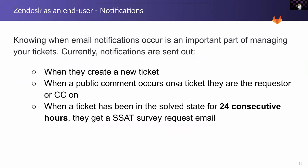It's important to know when you get notified. You'll get an email notification when you create a new ticket — an initial message letting you know we've received it along with some general information. When a public comment occurs on the ticket that you didn't make, you'll get an email with the comment and confirmation that the ticket has been updated. When a ticket has been in the solved state for 24 consecutive hours, you'll get a survey from GitLab asking how the ticket went. We use that information to improve the support team, so please consider submitting the survey when you receive it.